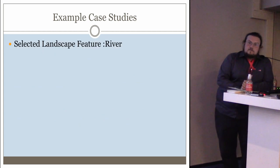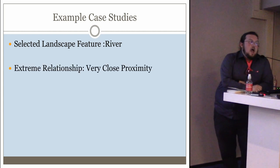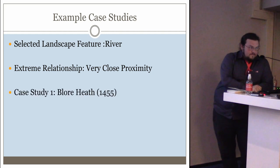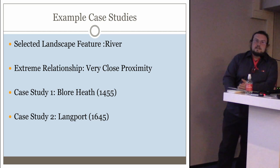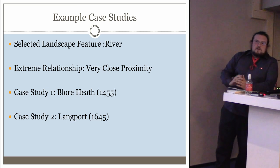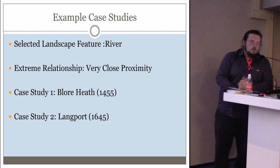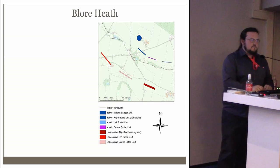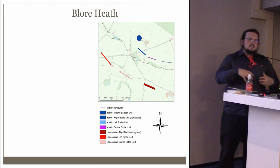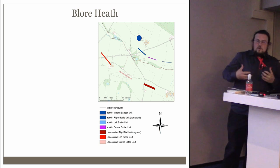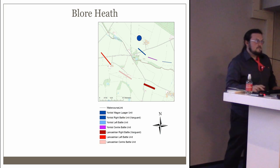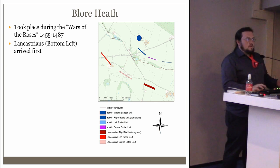For the purposes of this presentation, the selected landscape feature I've chosen is the river — specifically battlefields that are incredibly close to rivers. The two case studies I'm choosing are the Battle of Blore Heath, from the Wars of the Roses in 15th-century England, and the other is from the Civil War — or more accurately the War of the Three Kingdoms — in the 17th century. Hopefully these give an idea of how I look at these battlefields and how differences in how people approach landscape features is quite an important factor within battlefield analysis.